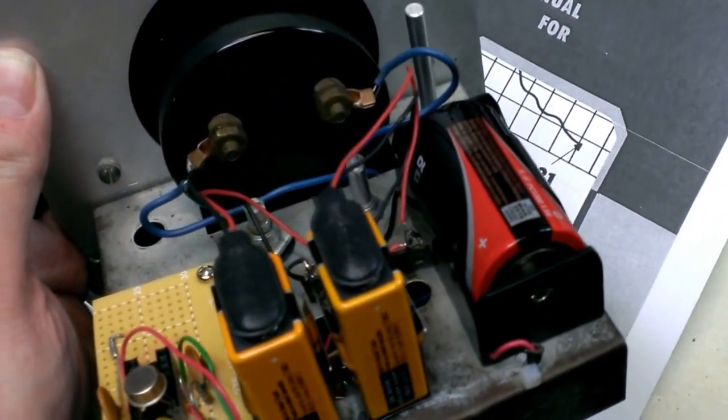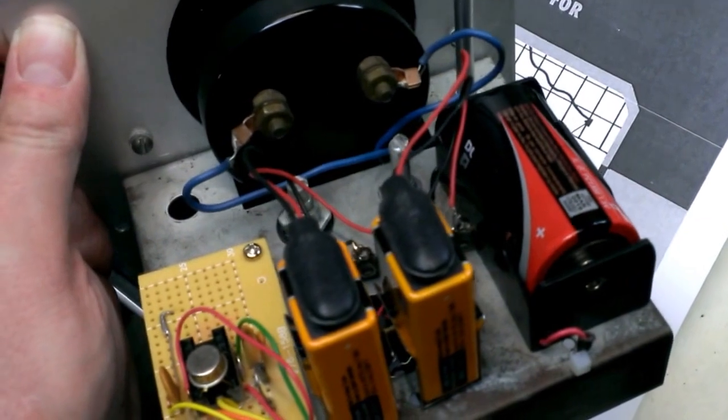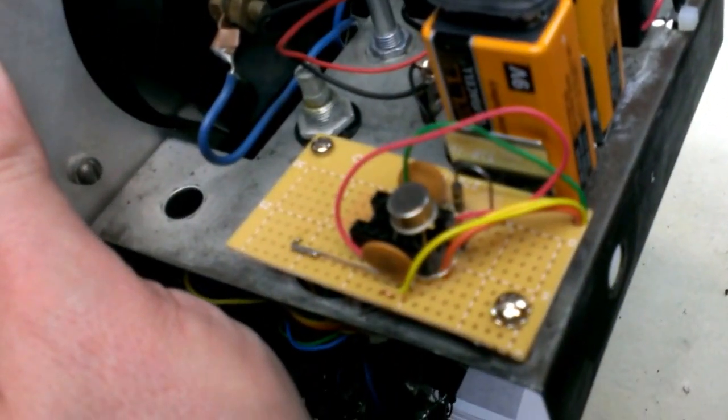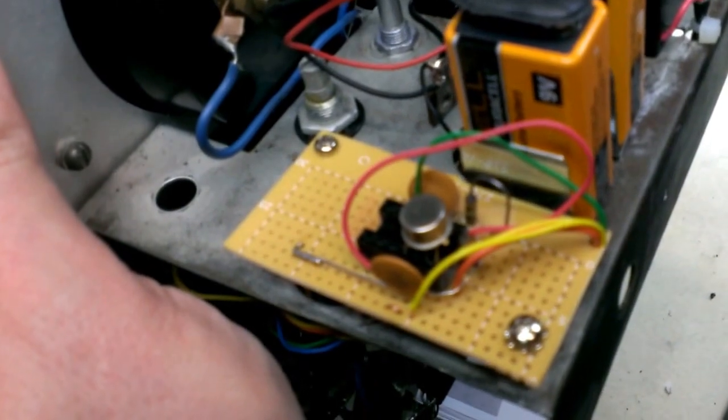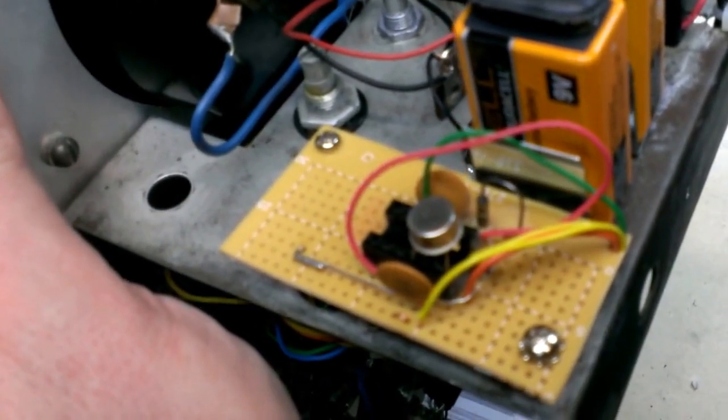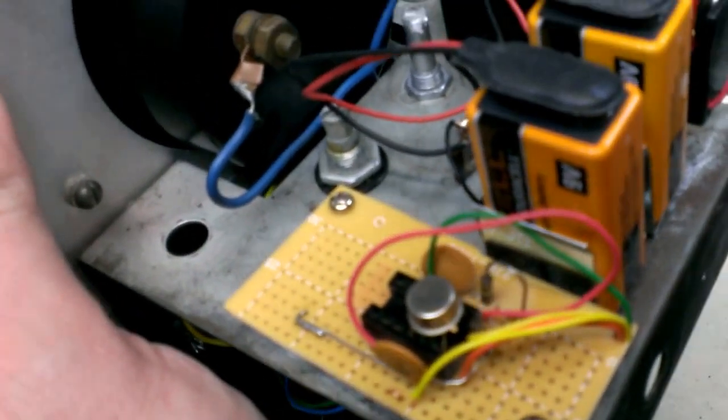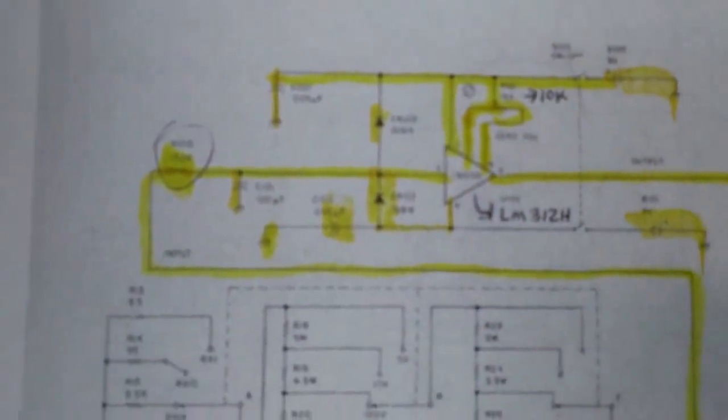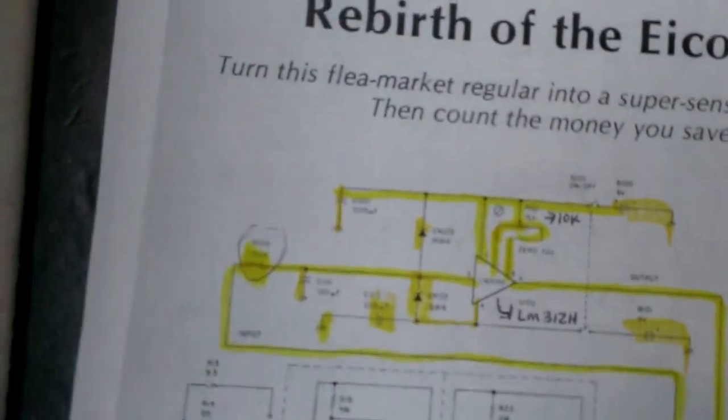And then, obviously, you've got the 1.5-volt D battery that's in there for the ohms range, the little board that I built up. You can see the red jumper wire going across.